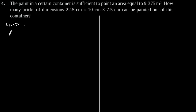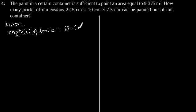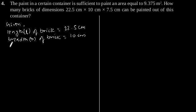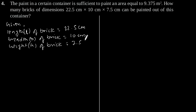Given: length of brick is equal to 22.5 cm, breadth of brick is equal to 10 cm, and height of brick is equal to 7.5 cm.